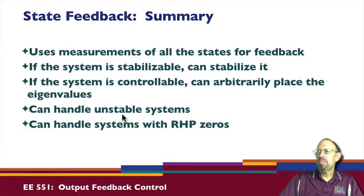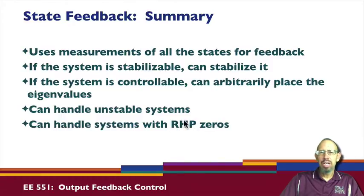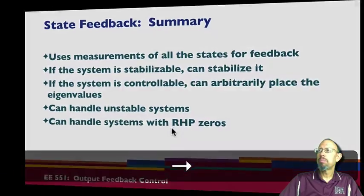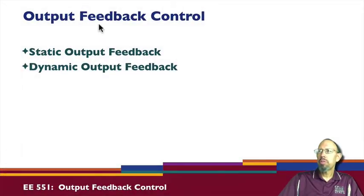What's important is that state feedback can obviously handle unstable systems if it's stabilizable or controllable, and it can also handle systems with right half plane zeros. Right half plane poles make a system unstable; right half plane zeros make the control problem harder if you're using output feedback. Since we're using state feedback rather than output feedback, we have the ability to deal with those right half plane zeros and not be affected by them.